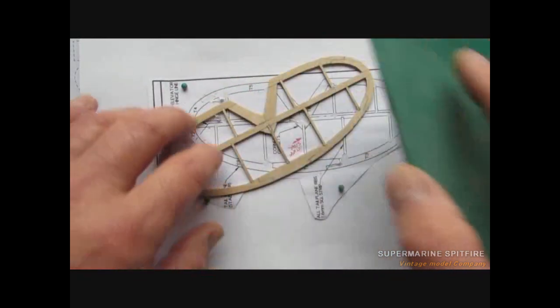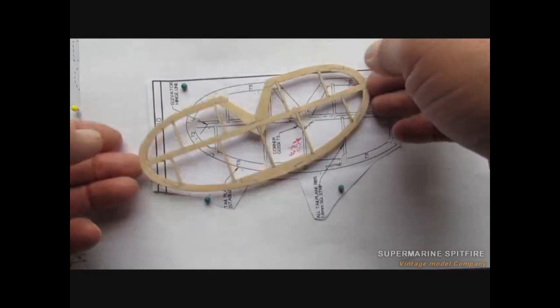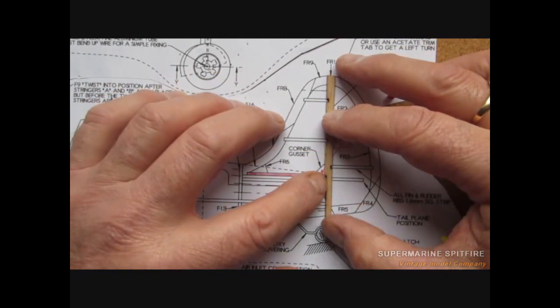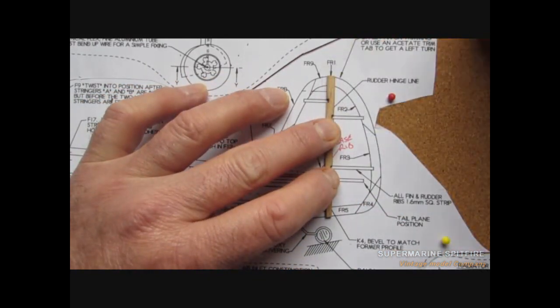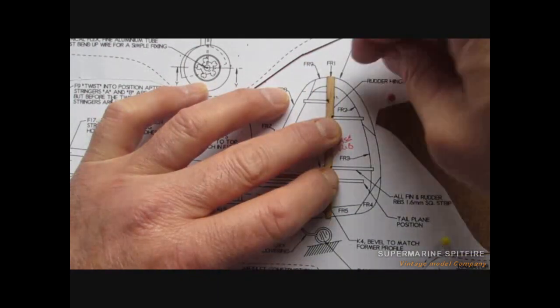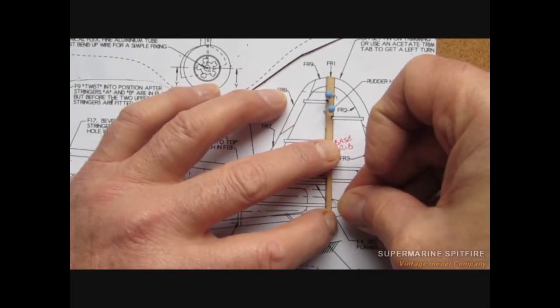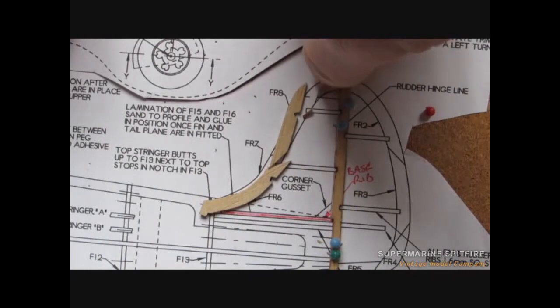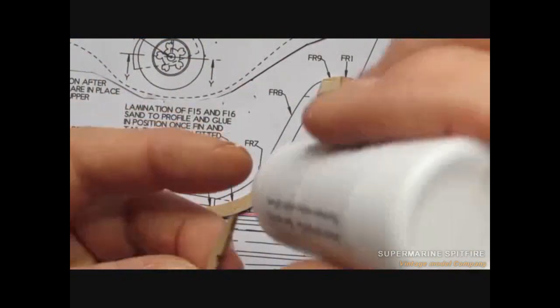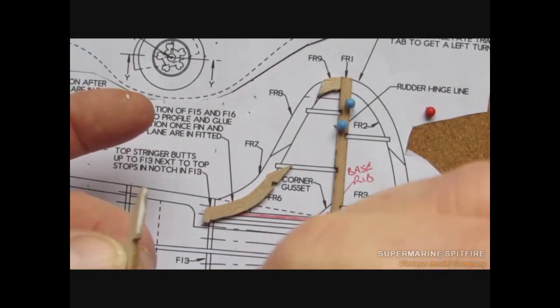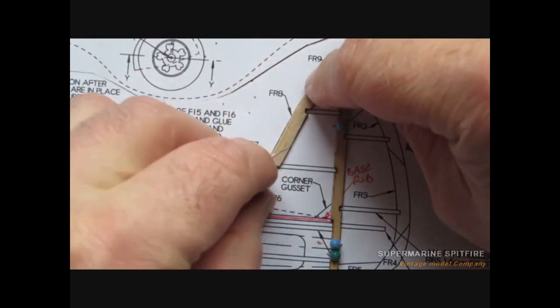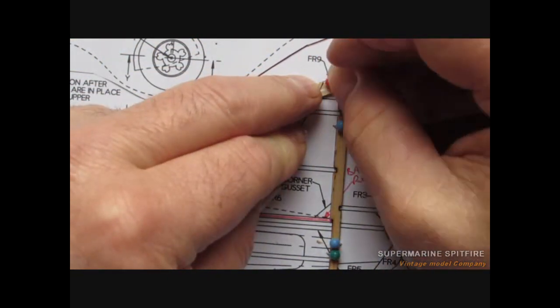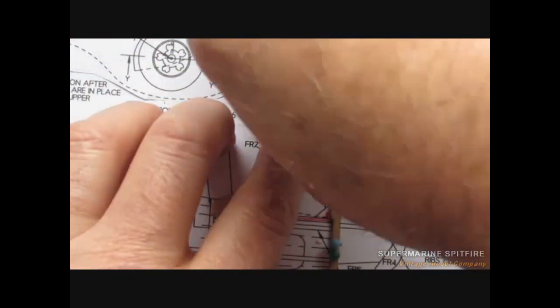On to the fin rudder. In true fashion, let's start with the central spar there, the FR1 that's called. So I can form that one part, and then again just try all your other bits in place first. All the surrounding edge pieces, and once you're happy, start putting your glue on, get them all pinned up nice and flush.